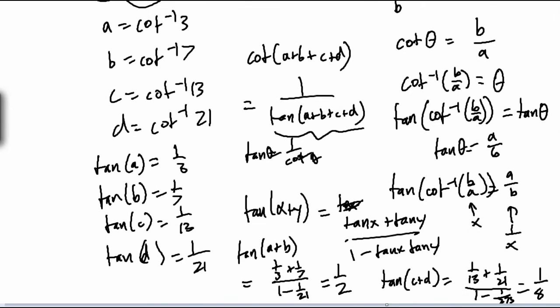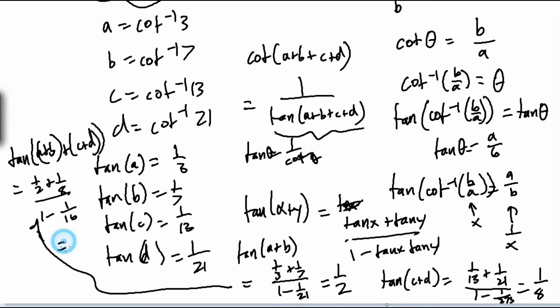Okay, now we have tangent A plus B and tangent C plus D, which means, let's just go over here, tangent A plus B plus C plus D is equal to 1 half plus 1 eighth over 1 minus 1 over 16, which of course is just 2 thirds.